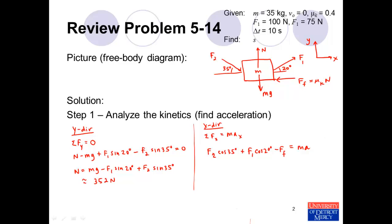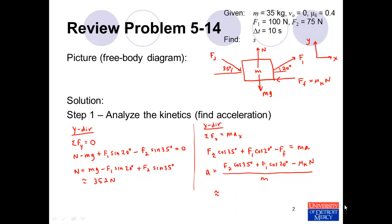Solving for acceleration: we have F2·cos(35°) plus F1·cos(20°) minus the friction force (coefficient of kinetic friction times the normal force we just found), all divided by the mass. That gives us 75·cos(35°) plus 100·cos(20°) minus 0.4 × 352, divided by 35 kilograms, which works out to approximately 0.42 meters per second squared.